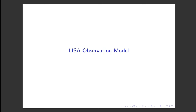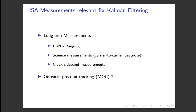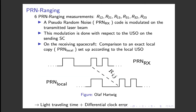Let me now introduce the LISA observation model. Here you can see the LISA measurements that would be relevant for a Kalman filter. These are in particular the long arm measurements, the PRN ranging, the sine speed nodes, and the clock sideband beat nodes. Also, the on-Earth position tracking performed in the MOC, the Mission Observation Center, might be useful. As an example, I will discuss here the pseudorandom noise ranging and the corresponding observation model. All in all, we have six PRN ranging measurements, one for each laser link. A pseudorandom noise code is modulated onto the transmitted laser beam with respect to the ultra-stable oscillator of the sending spacecraft. On the receiving spacecraft, we compare that PRN code to an exact local copy set up according to the local ultra-stable oscillator. By time-shifting and correlating these two codes, we can deduce light-traveling time plus the differential clock error.